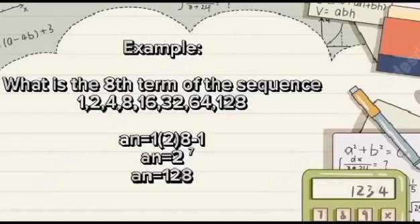Next: 1 times 2 raised to the power of 8 minus 1, so a sub n equals 2 raised to 7. To get the eighth term of the sequence, we raise 2 to 7. 2 raised to 7 is equal to 128. So ang ating eighth term is 128.